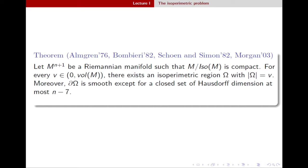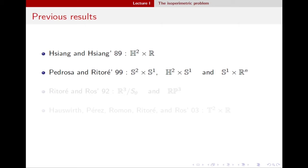Under the assumptions we made on our manifold, you always have a solution — you always have an isoperimetric region. Moreover, this isoperimetric region is smooth except for a closed set of Hausdorff dimension at most n minus seven. So if your manifold has dimension seven or less, these objects are always smooth, and even in higher dimensions the singular set is small. This was a very important contribution, and people started making progress using this regularity result in other spaces.